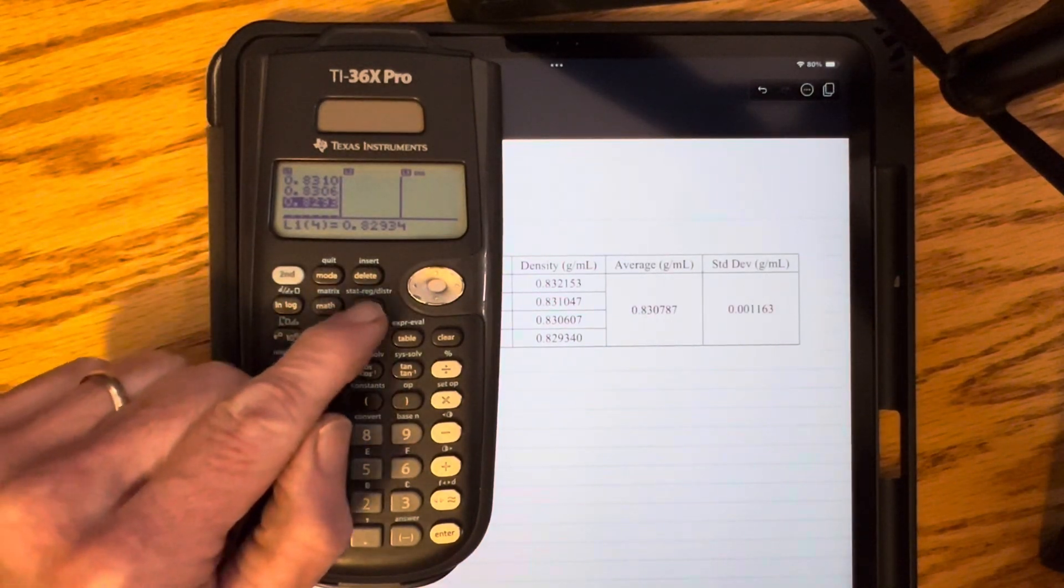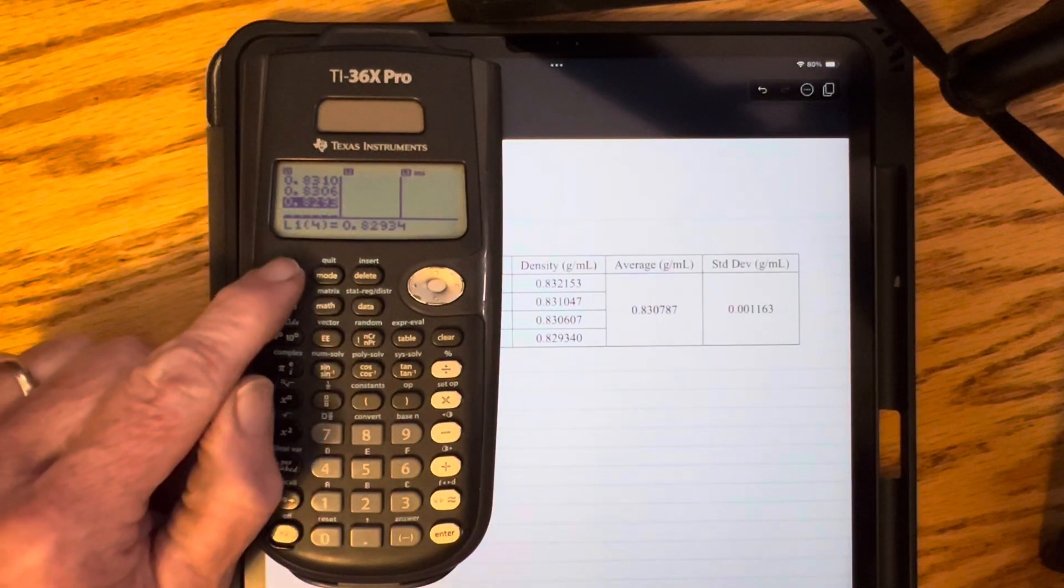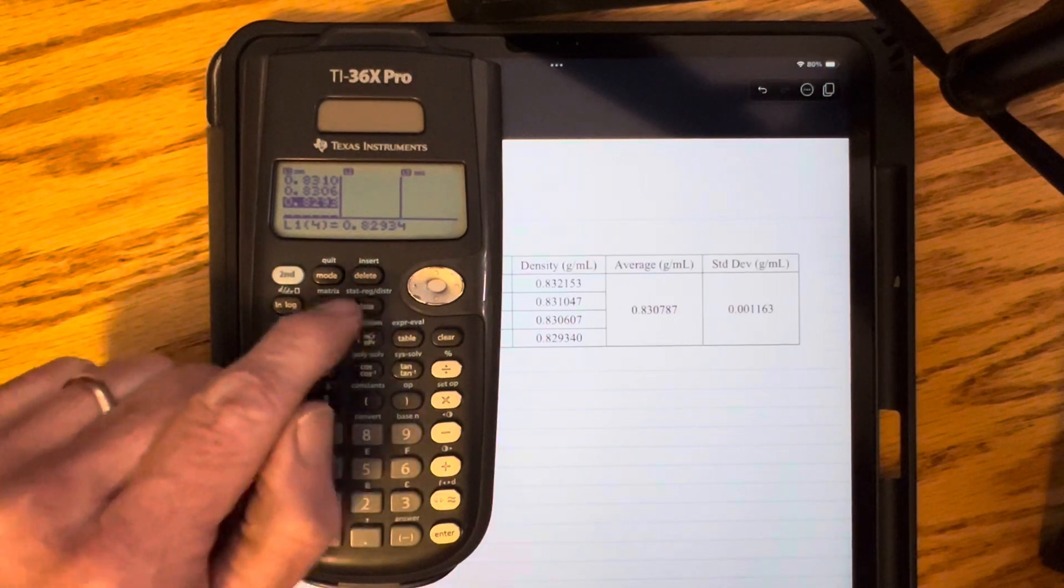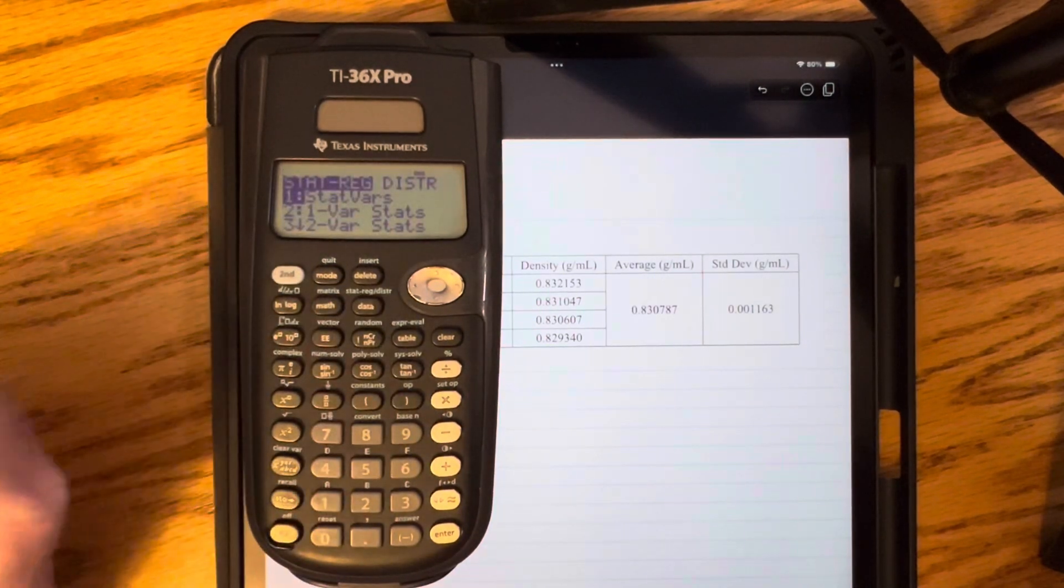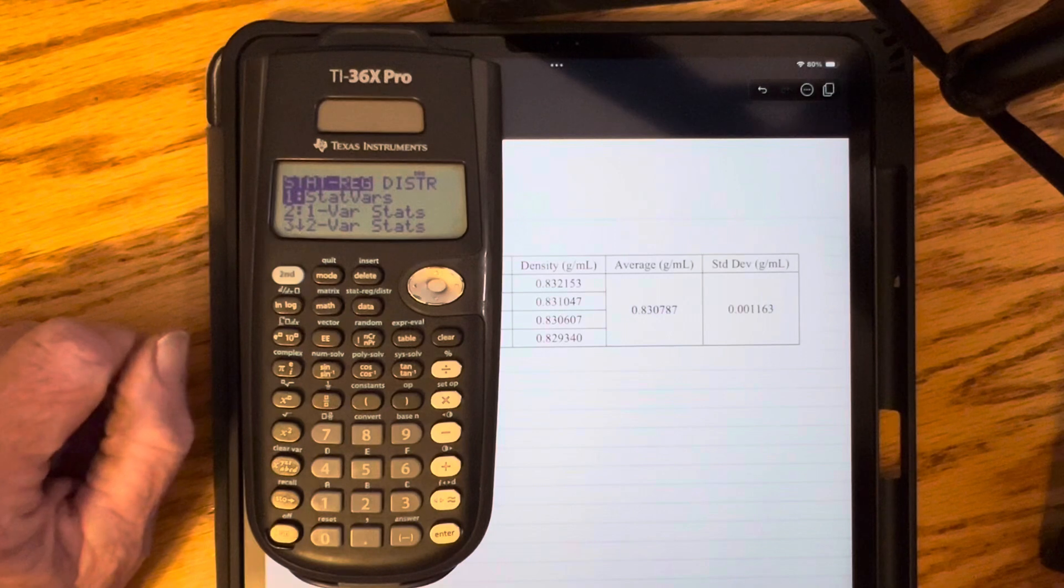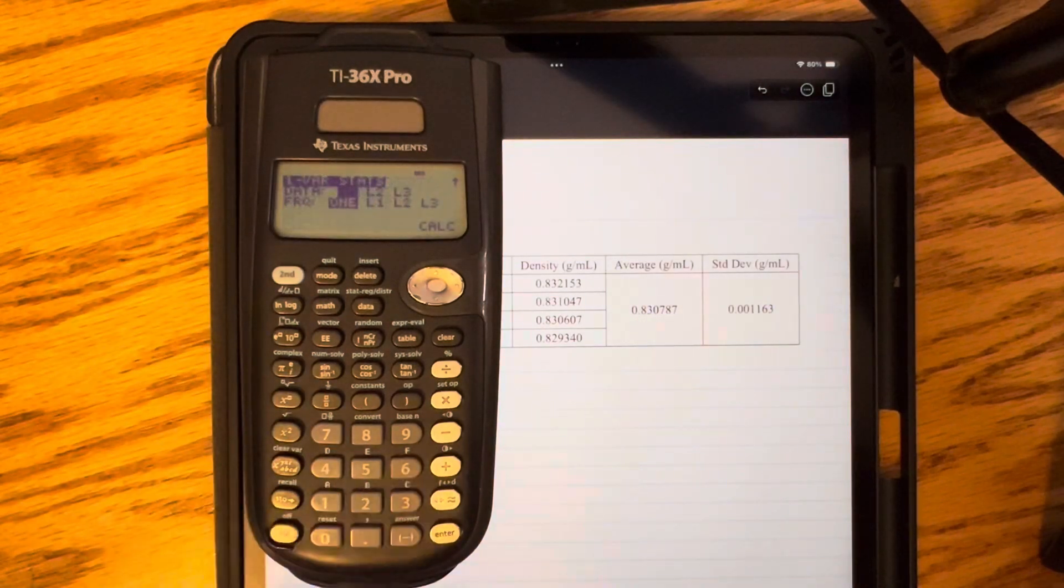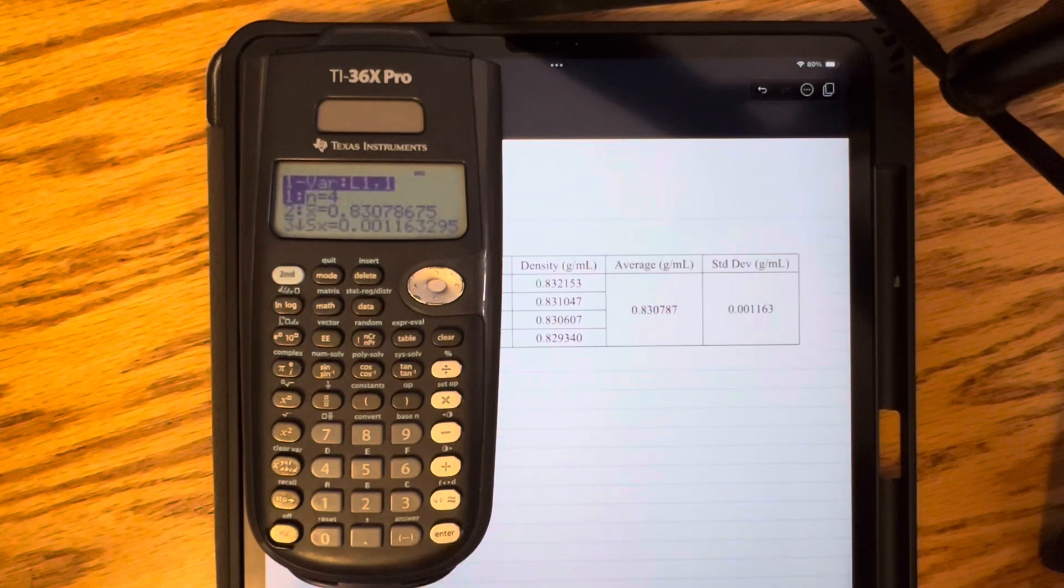Now I want this StatReg button, so I'm going to press 2nd, and that Data button that says StatReg above it. I want one variable statistics, so I press the number 2 and press Enter twice, three times.